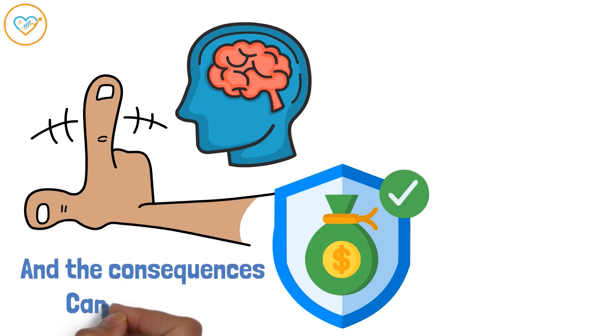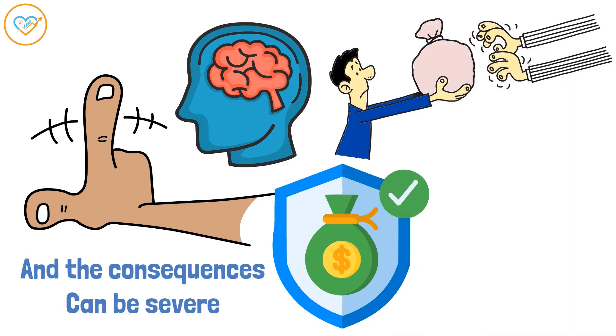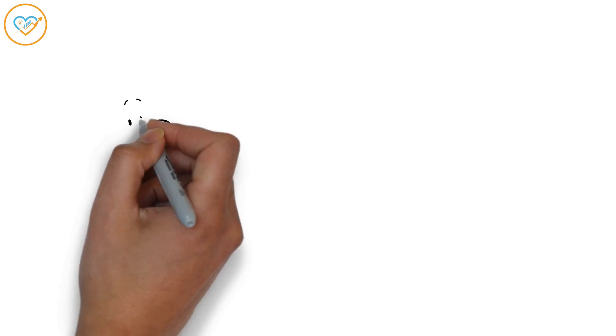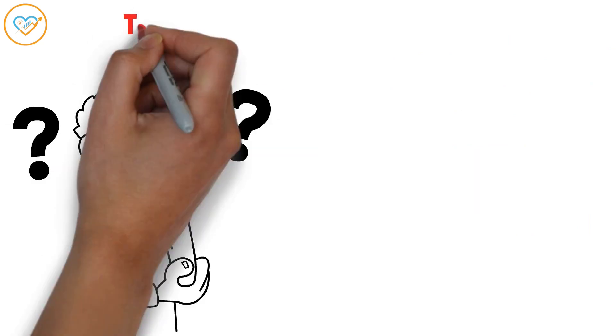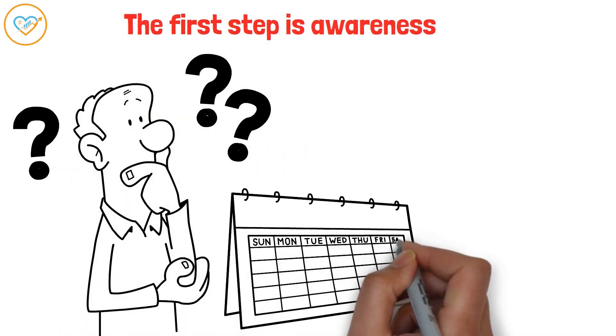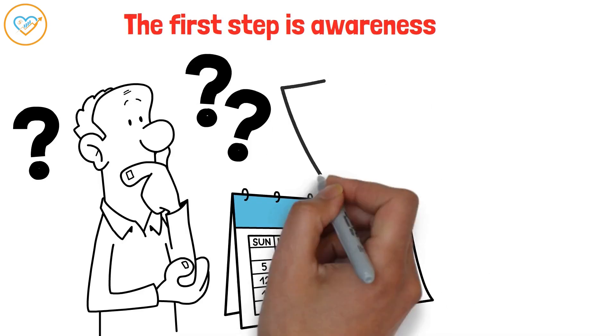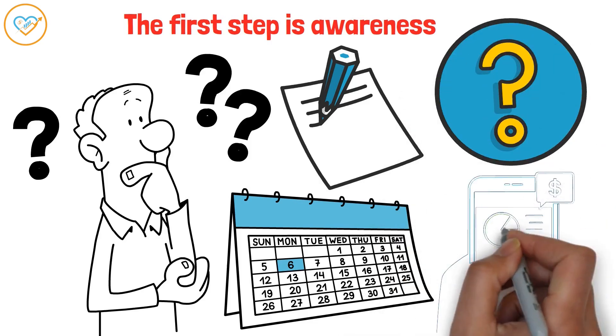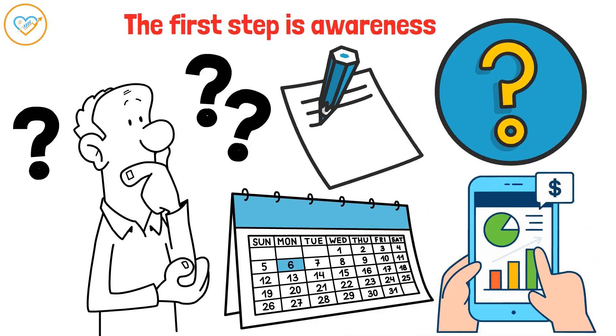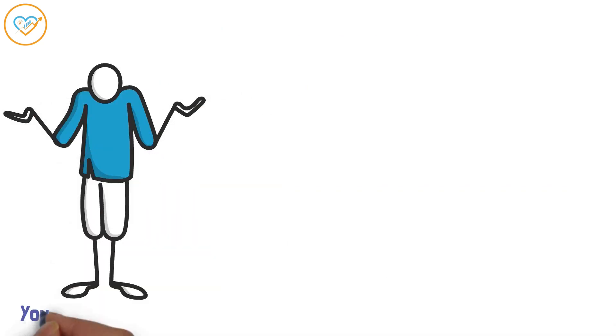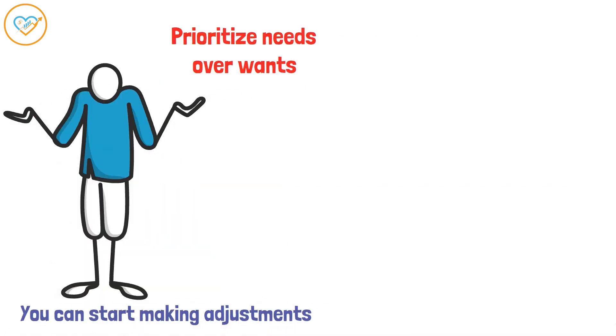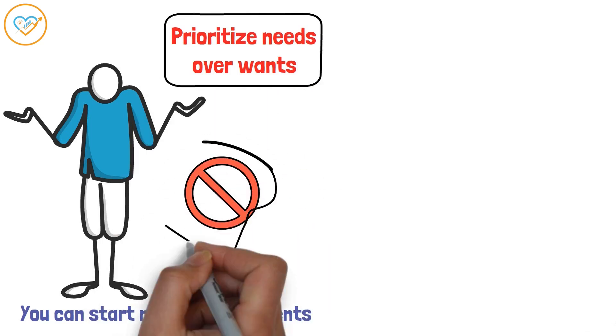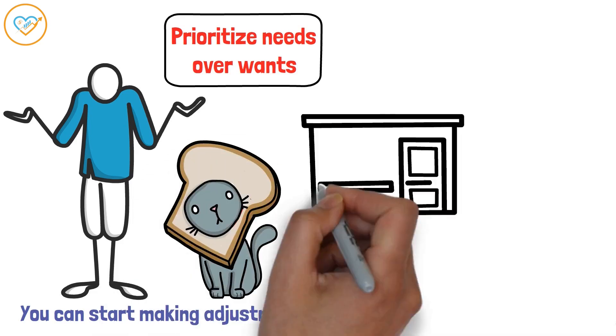Overspending isn't just about buying unnecessary things. It's about a mindset that prioritizes immediate gratification over long-term financial security. And the consequences can be severe. You might find yourself drowning in debt, unable to save for emergencies, or constantly stressed about money. So how can you break this cycle? The first step is awareness. Track your spending for a month. Every dollar you spend, write it down. You might be surprised by where your money is actually going. Apps and budgeting tools can make this process easier. Once you know where your money is going, you can start making adjustments. Prioritize needs over wants. Cut back on unnecessary expenses. Find cheaper alternatives for things like entertainment or groceries.